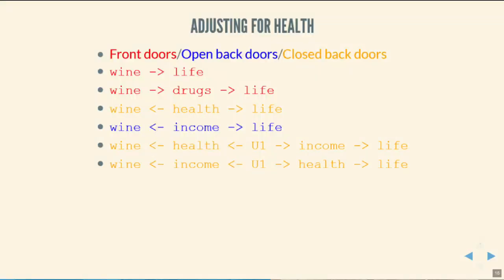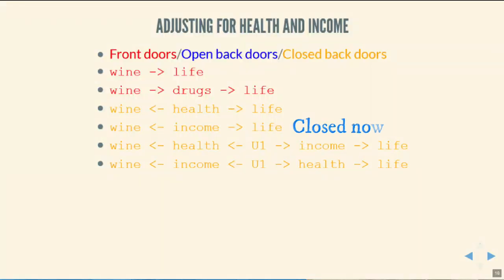To identify the effect of wine on lifespan, we need to adjust not just for previous health but also for income, so the remaining open back door is closed as well. It's fine to have two adjusted variables on the same path. Once we adjust for both health and income, we've closed all the back doors while leaving all the front doors open. If we then look at the relationship between wine and lifespan after adjusting for income and health — assuming our diagram was correct — we will have identified the causal effect of wine on lifespan.